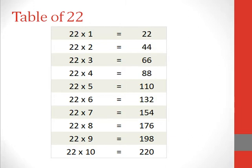Table of 22. 22 1s are 22, 22 2s are 44, 22 3s are 66, 22 4s are 88, 22 5s are 110.